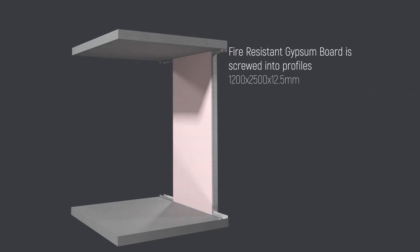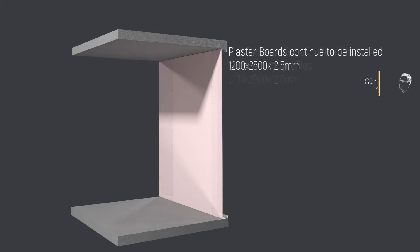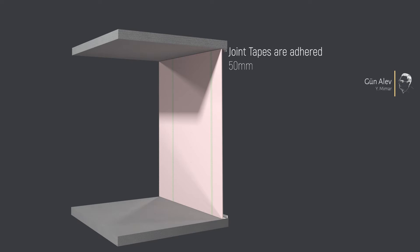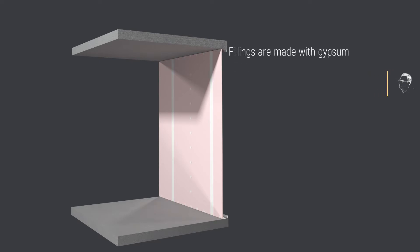Fire-resistant gypsum boards are screwed. Plaster boards continue to be installed. Joint tapes are adhered and gypsum fillings are made.